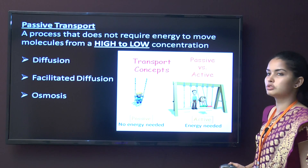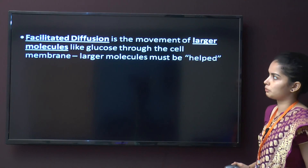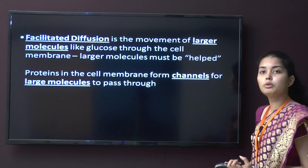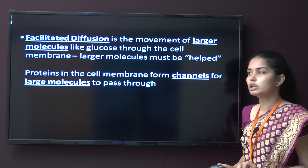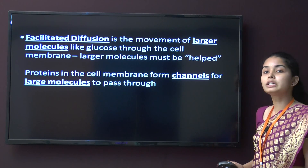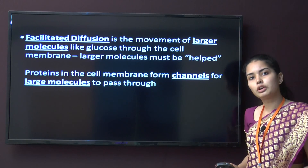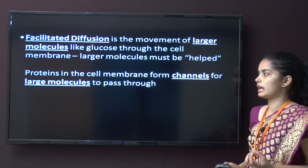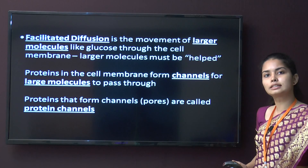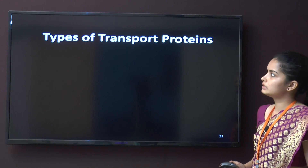Diffusion, facilitated diffusion, and osmosis are the types of passive transport. Facilitated diffusion is the movement of larger molecules like glucose through the cell membrane. Proteins in the cell membrane form channels, and large molecules pass through these channels. Proteins that form the channels are known as protein channels.